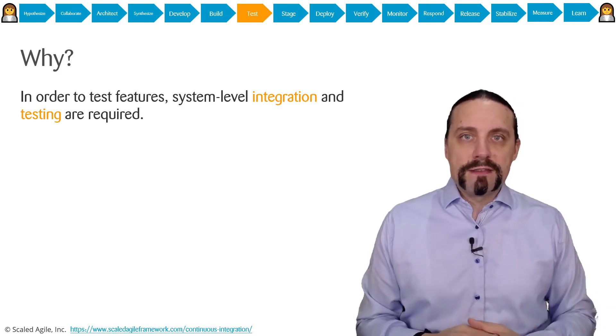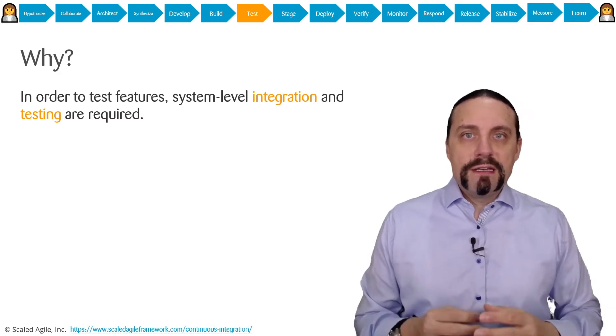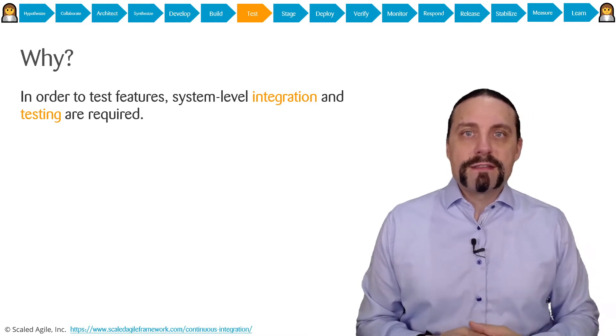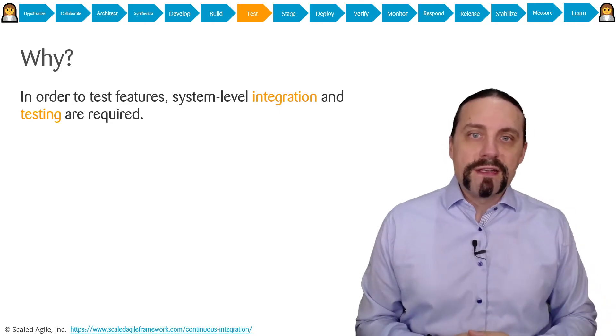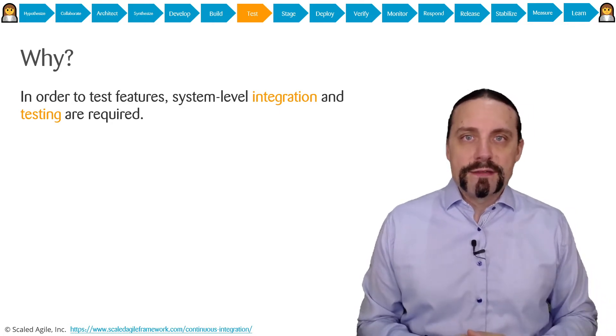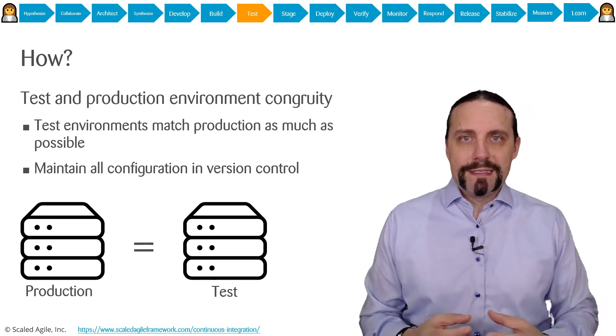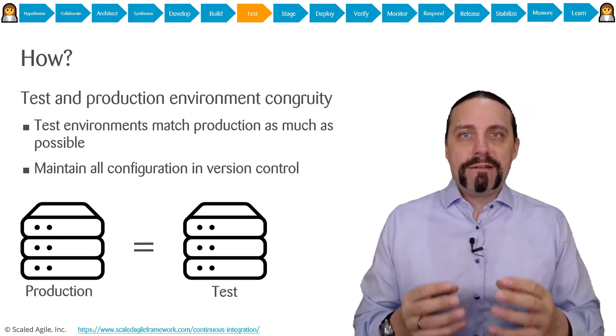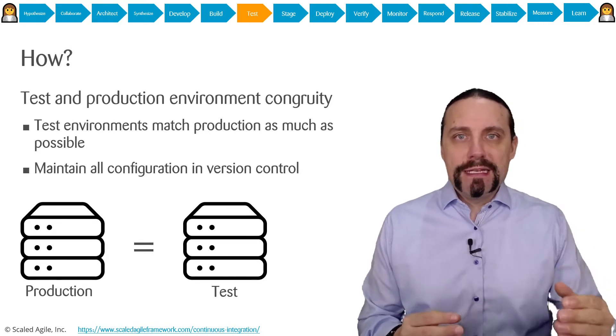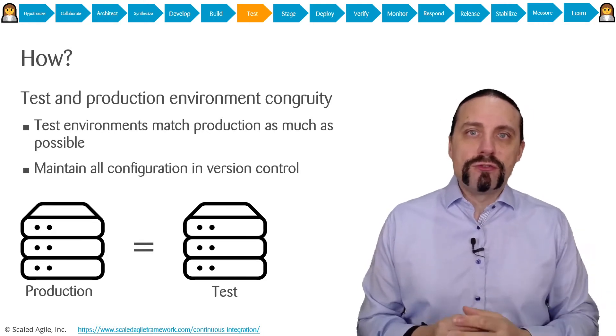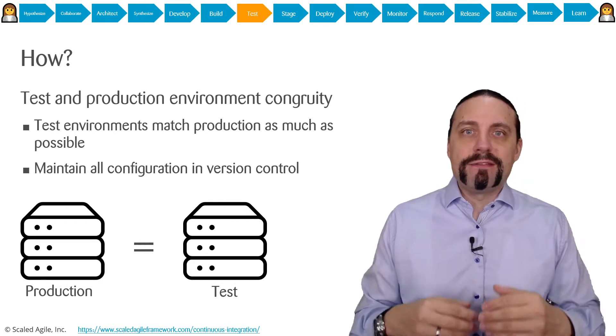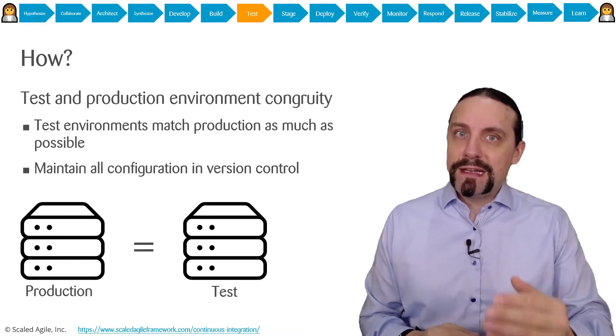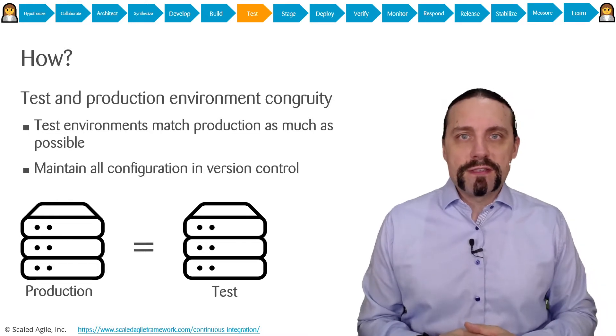In the build step we executed the unit and component tests. Now in the test end-to-end step it is required that we do the tests on a feature level which are system level or integration tests. To do integration tests requires an environment as near as possible to the production system so that we can reliably execute the tests.